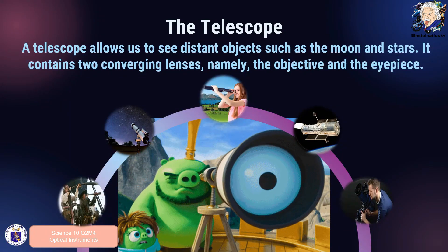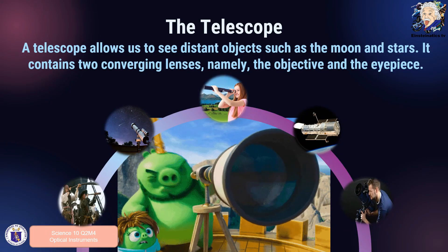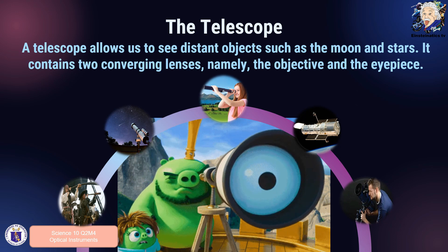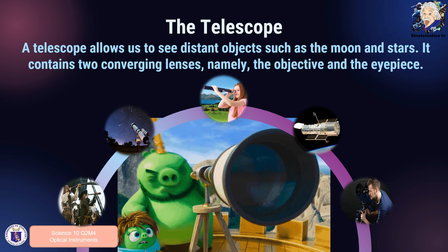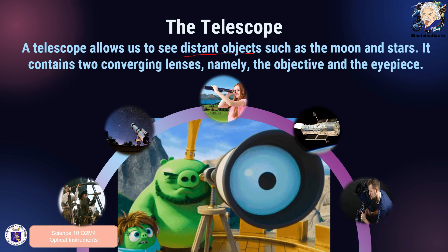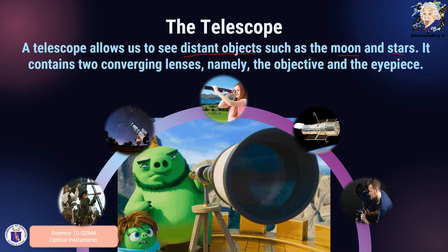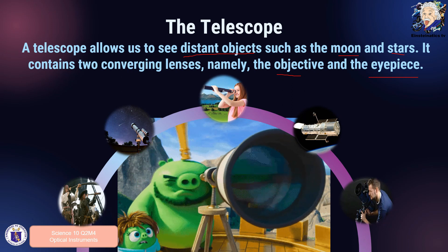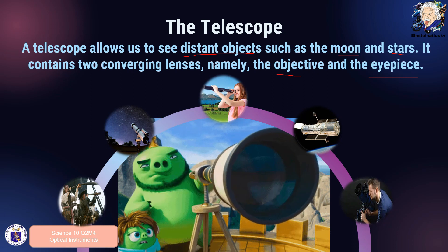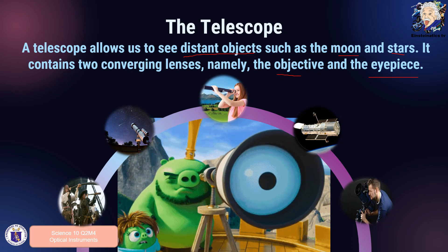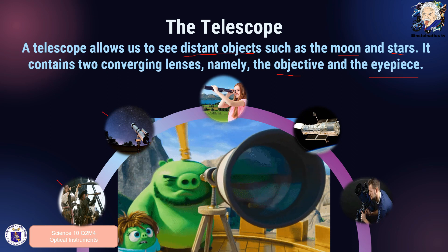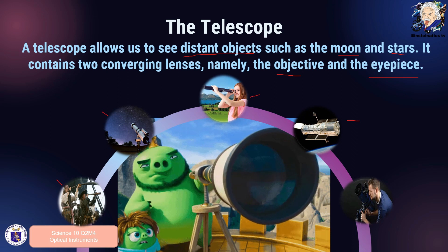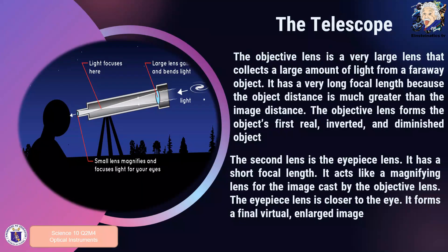Let us now learn about the telescope. If a microscope is used to study microorganisms, telescopes allow us to see distant objects and to observe heavenly bodies such as moons and stars. A telescope contains two converging lenses — the objective and the eyepiece — just like a binocular. Telescopes have different designs, but their main parts are the same.